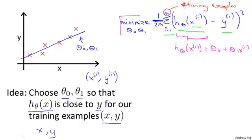And this notation, minimize over theta 0 and theta 1, this means find me the values of theta 0 and theta 1 that causes this expression to be minimized. And this expression depends on theta 0 and theta 1.